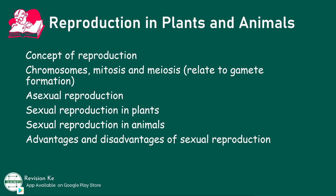You need to describe and state the importance of asexual reproduction. You should also compare adaptations of wind and insect pollinated flowers, describe the process of fertilization in flowering plants, and describe and explain how different fruits and seeds are formed and dispersed.